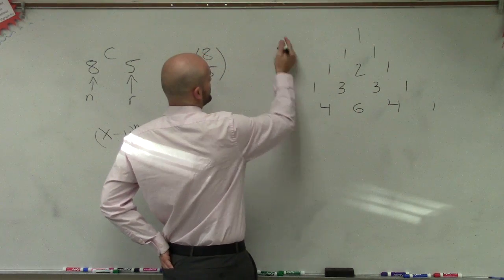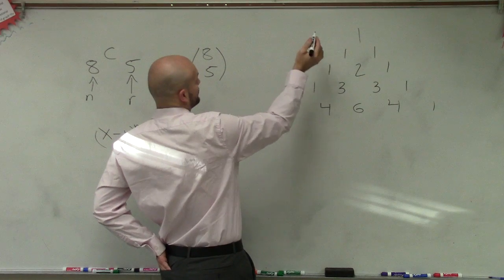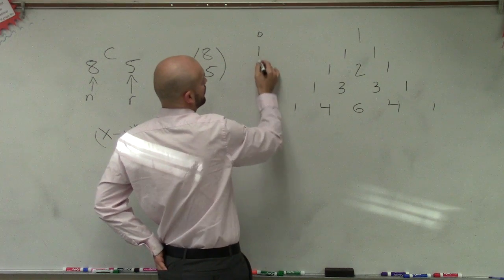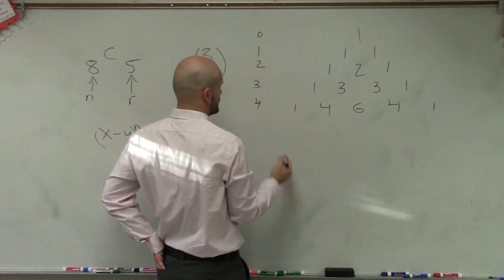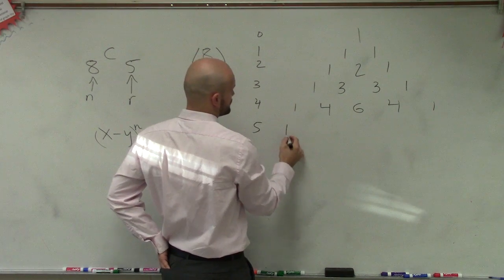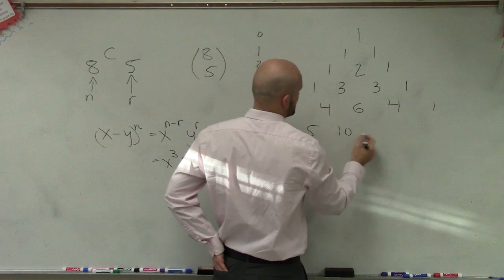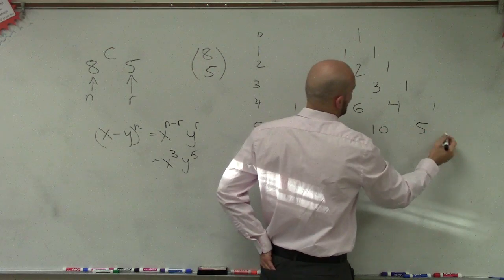So this is talking about your expansion degree. So this is 0, 1, 2, 3, 4. And now let's do 5, which is 1, 5, 10, 10, 5, 1.